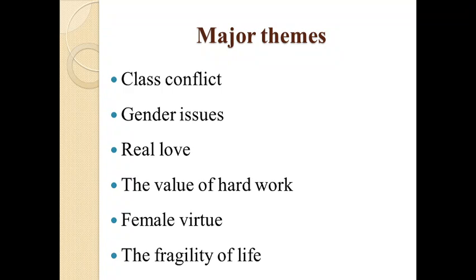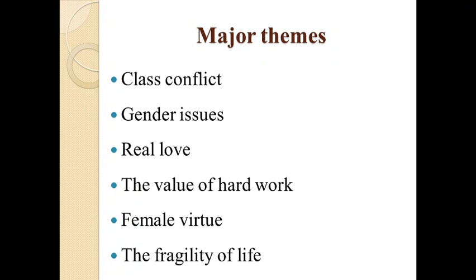The last theme is the fragility of life. Gaskell portrays working-class life in Manchester as being haunted by sickness and death. As a result, her characters are aware of their mortality from a young age. Mary's mother dies when she is only 13, and she continues to lose friends and family as she grows up. Certainly, for the poor characters, their terrible living conditions contribute to the high mortality rate. However, Gaskell emphasizes that death can be around the corner for anybody — Harry Carson is wealthy yet meets death at an early age. Across classes, the constant threat of death forces Gaskell's characters to appreciate the value and beauty of life.